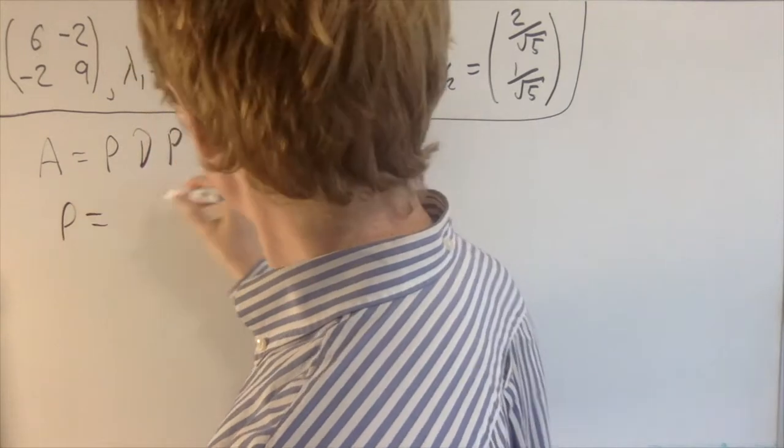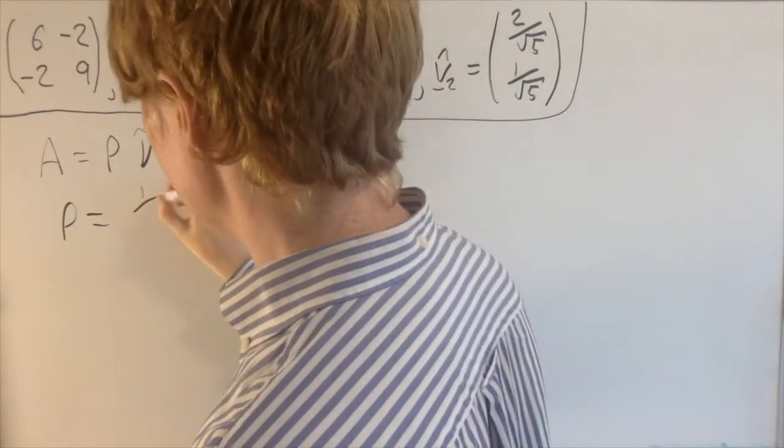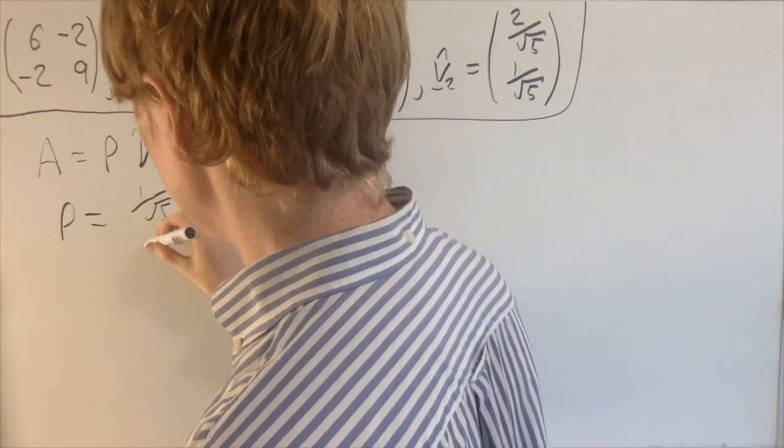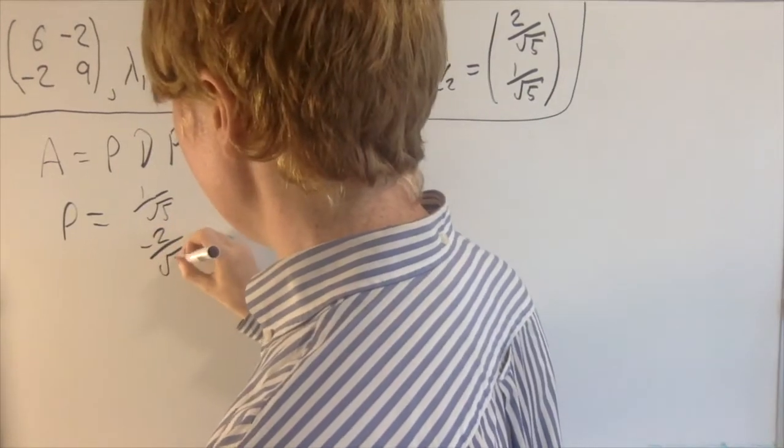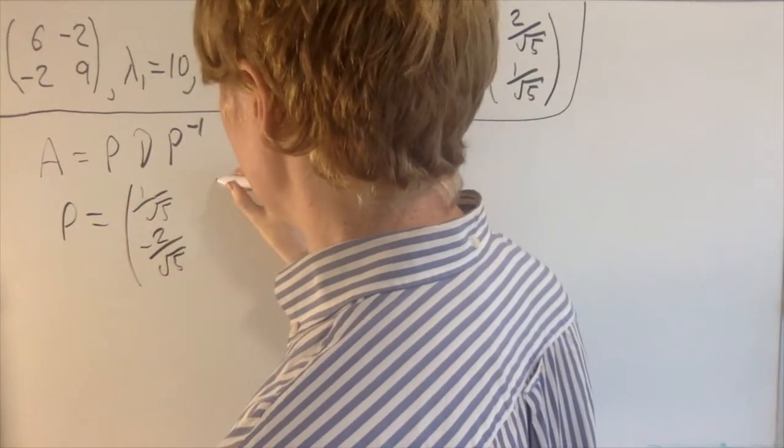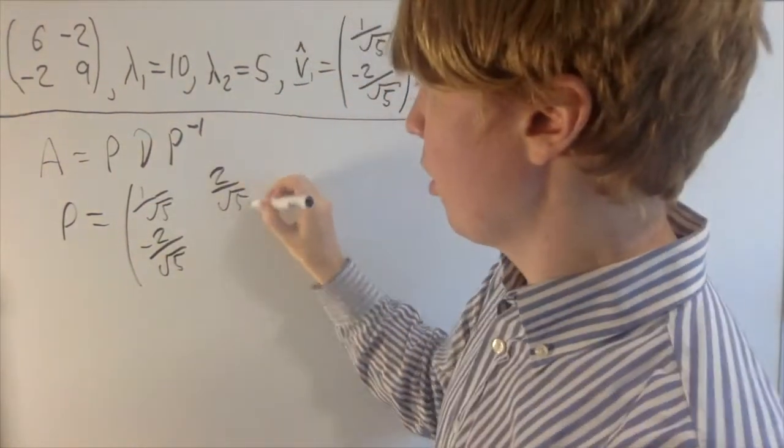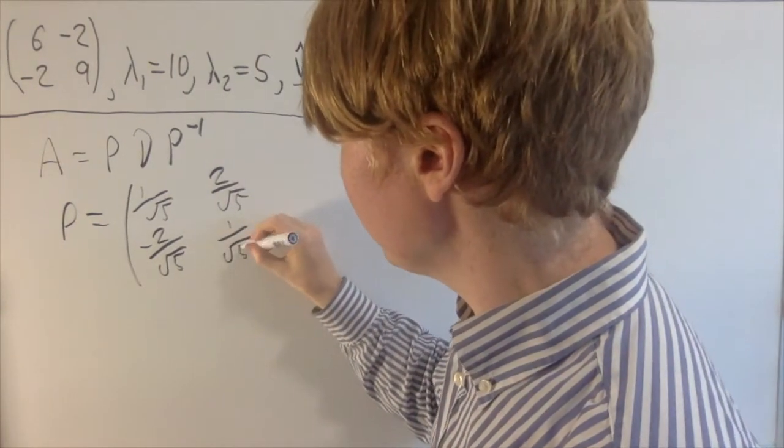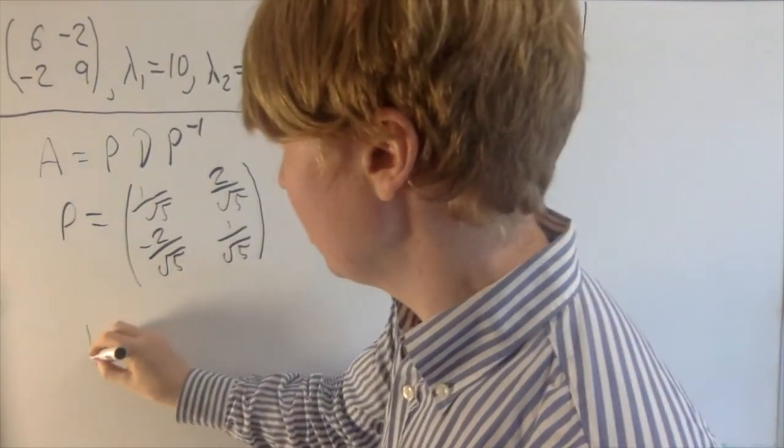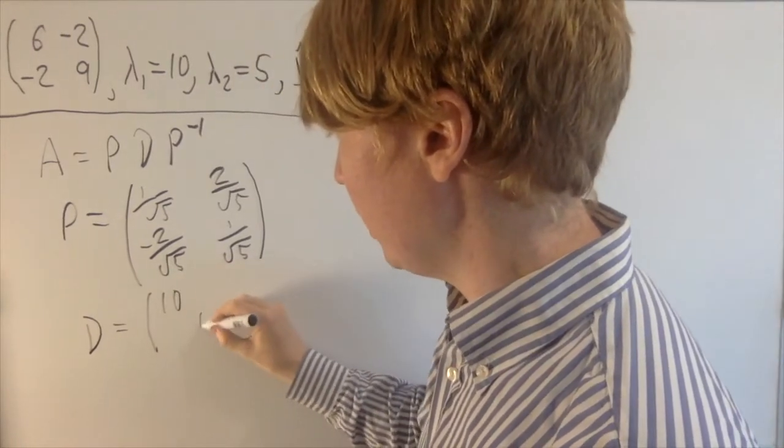So P, this is going to be 1 over root 5 in the first column, minus 2 over root 5. And the second column will be 2 over root 5, 1 over root 5.